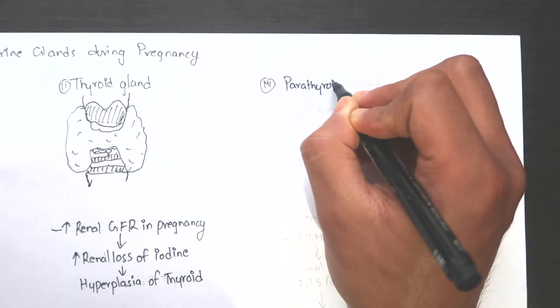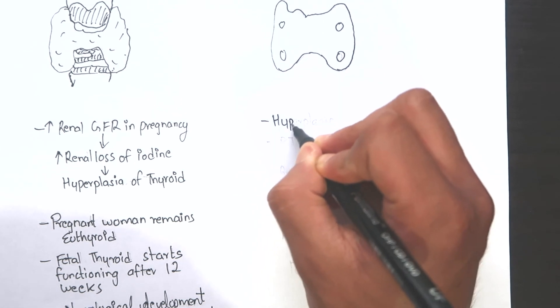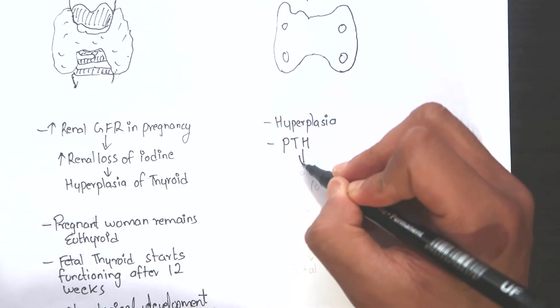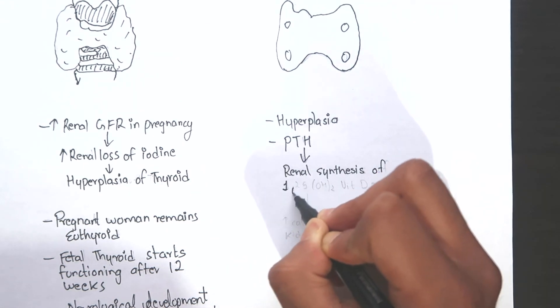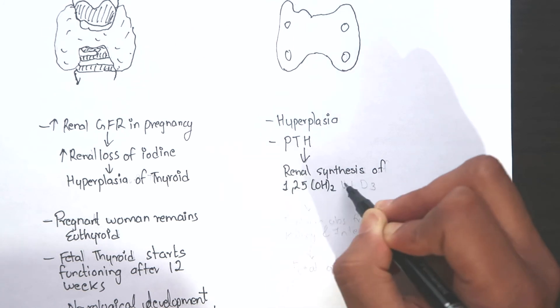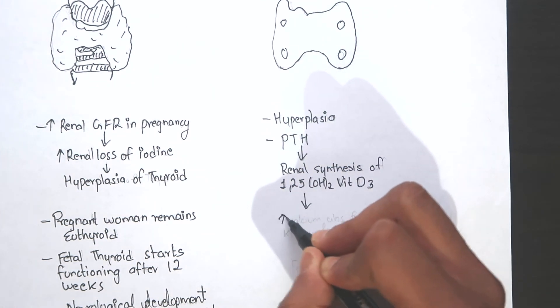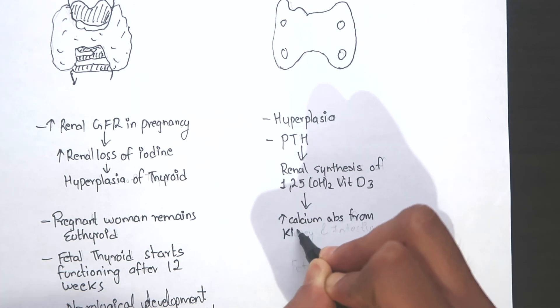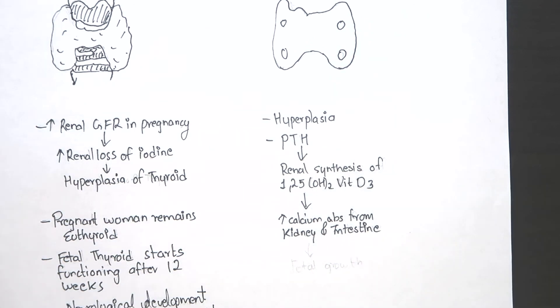Now, on to the parathyroid gland. Maternal parathyroid hyperplasia occurs during pregnancy. The main functions of parathyroid hormone are to regulate the renal synthesis of 1,25-dihydroxyvitamin D3 and mobilization of calcium from bone. 1,25-dihydroxyvitamin D3 enhances calcium reabsorption from the kidneys and absorption from small intestines.